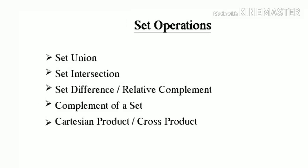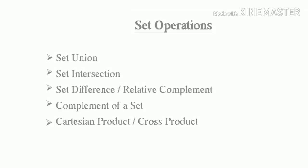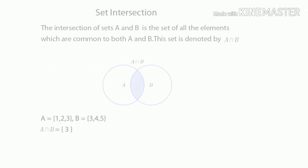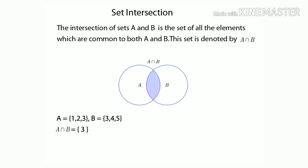The next one is set intersection. The intersection of sets A and B is the set of all the elements which are common to both A and B. The set is denoted by A ∩ B. A equal to {1, 2, 3}, B equal to {3, 4, 5}. A intersection B equal to {3}.